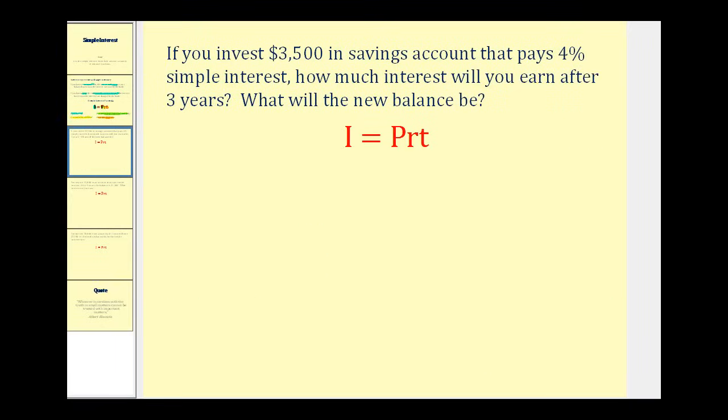If you invest $3,500 in a savings account that pays 4% simple interest, how much interest will you earn after three years and what will the new balance be? So for this situation, we're trying to find I or the interest. P, the principal or starting amount would be $3,500.